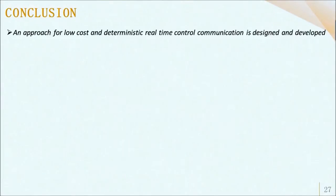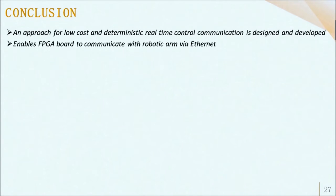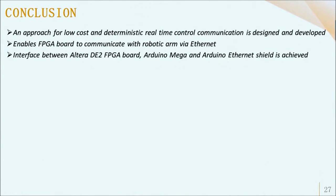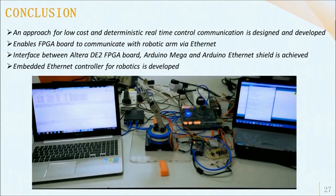In conclusion, an approach for low-cost and deterministic real-time control communication has been designed and developed in this project. The FPGA board communicates with the robotic arm via Ethernet. Furthermore, the interface between the Altera DE2 FPGA board, Arduino Mega, and Arduino Ethernet shield is achieved. In other words, an embedded Ethernet controller for robotics has been developed in this project.